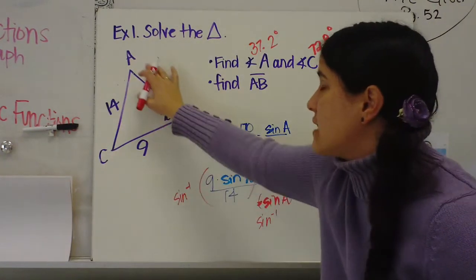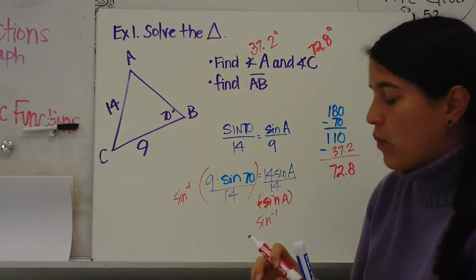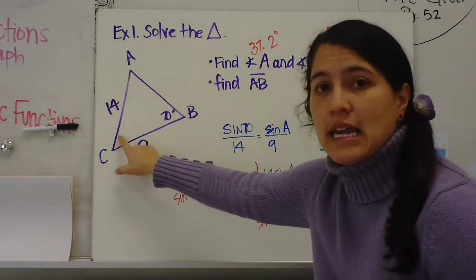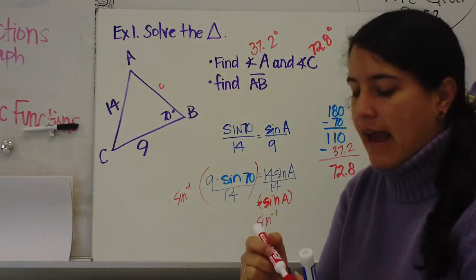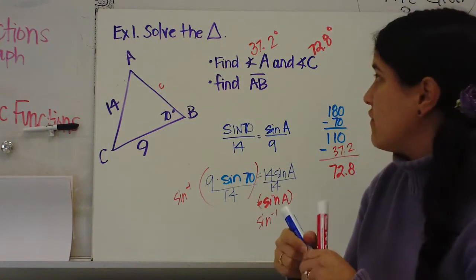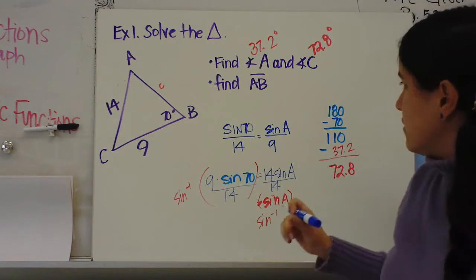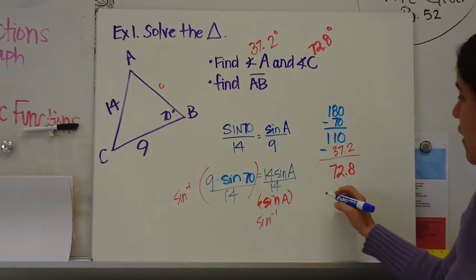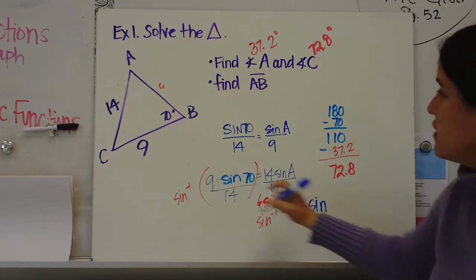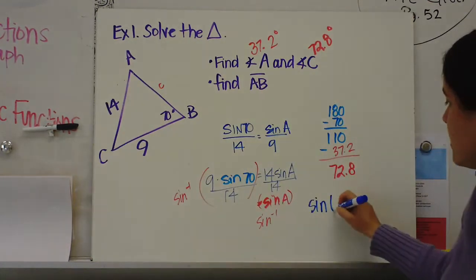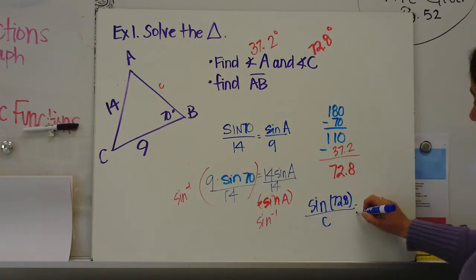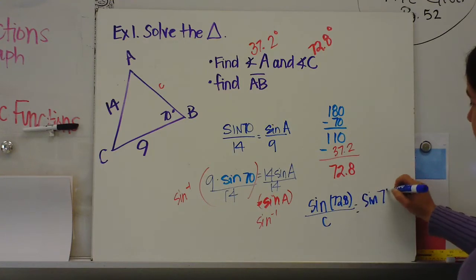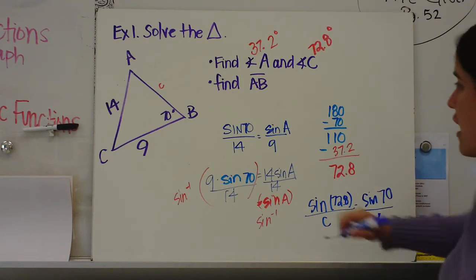Now I need to find this side right here, AB. Because this is angle C, then this would be length little c. Now I can use the law of sines to find the length of little c. I'm going to set it up right here. Sine of C, but I know that C is 72.8 over c.